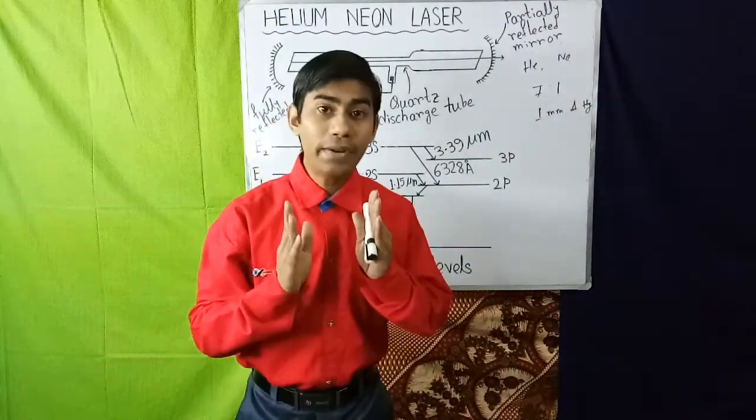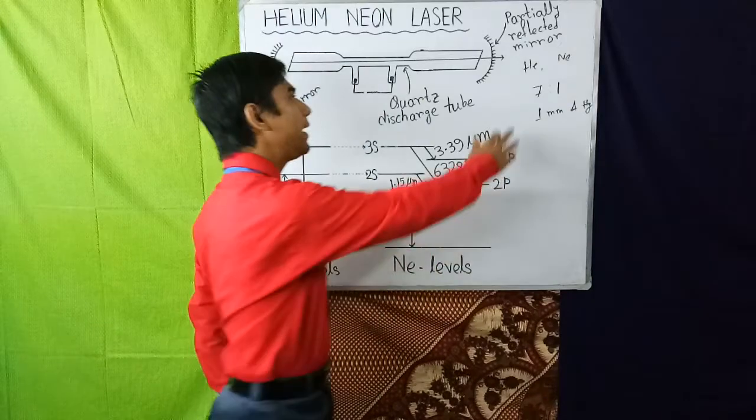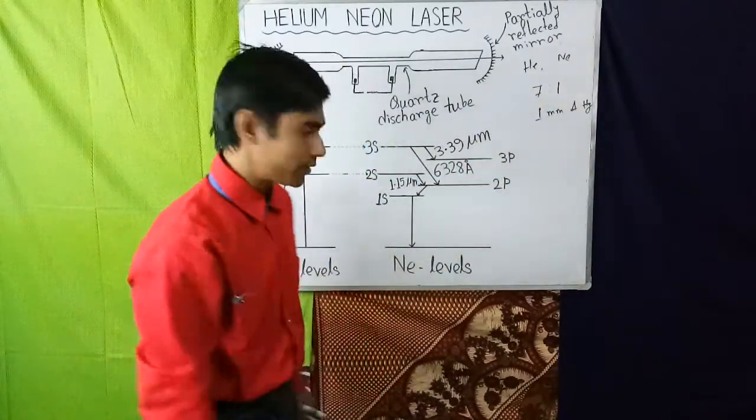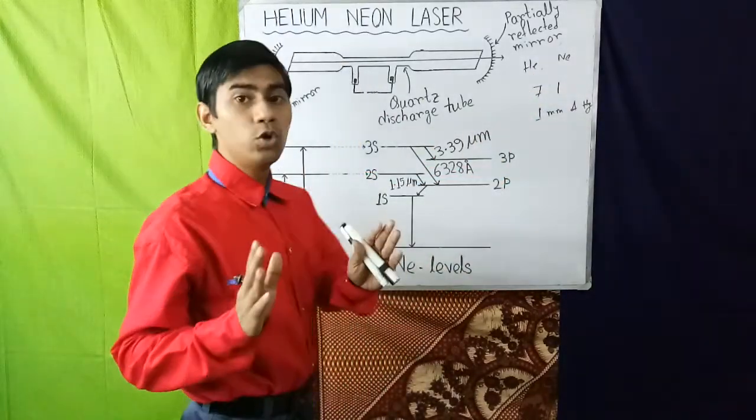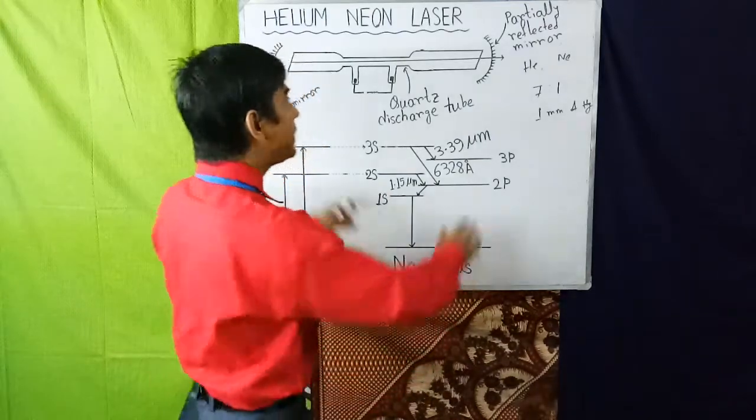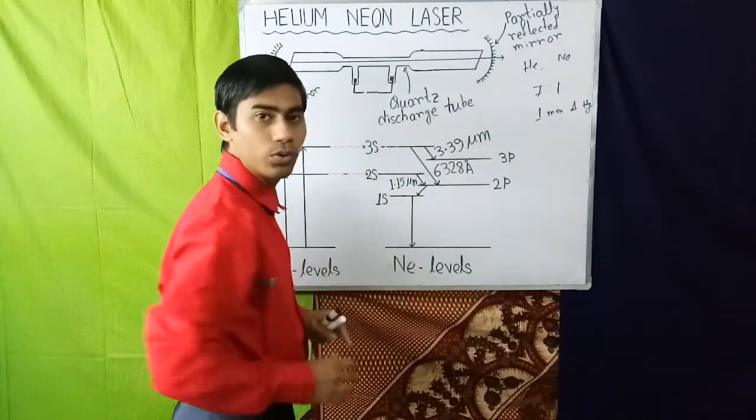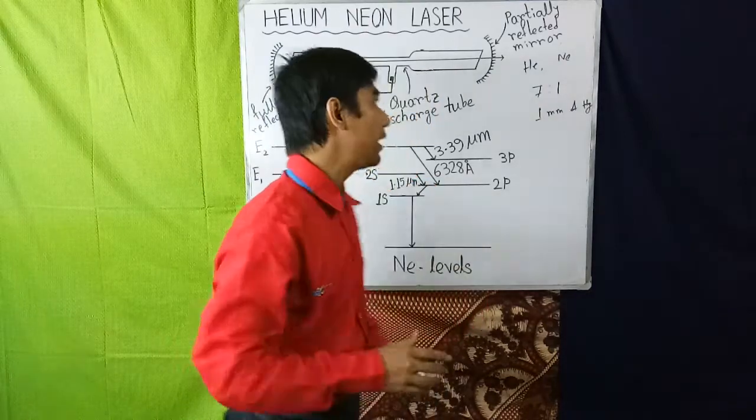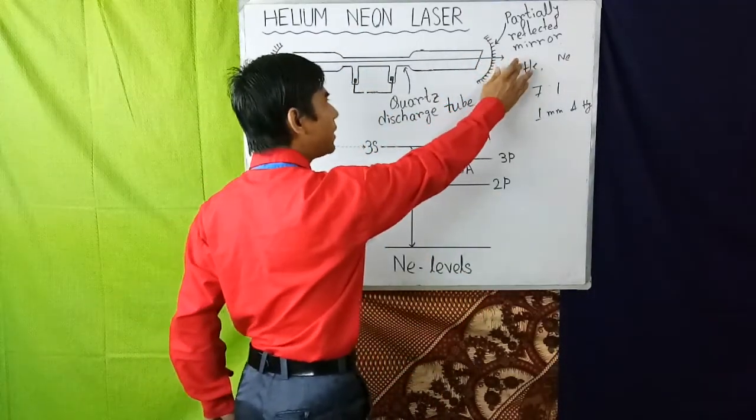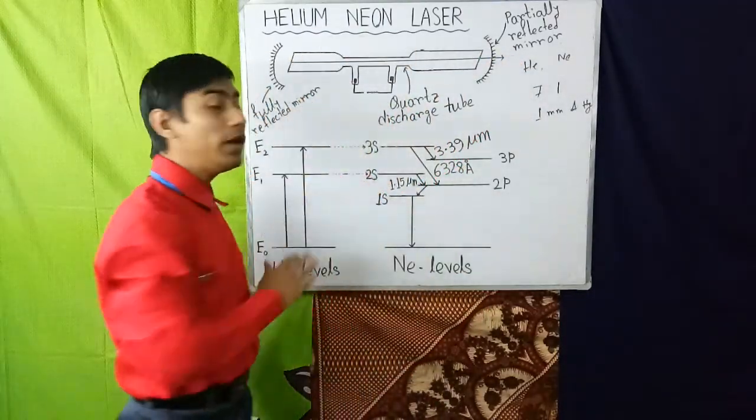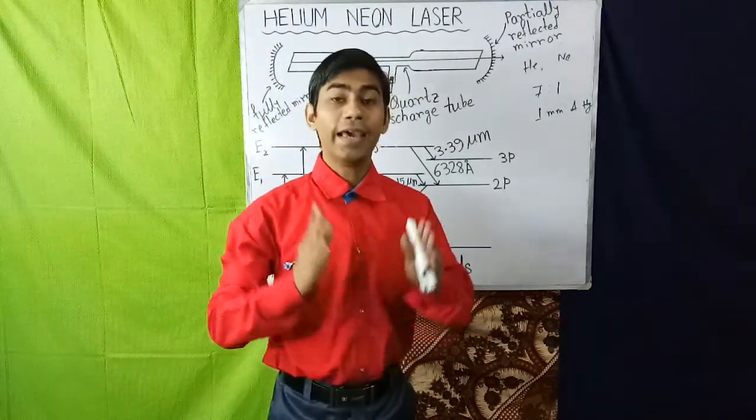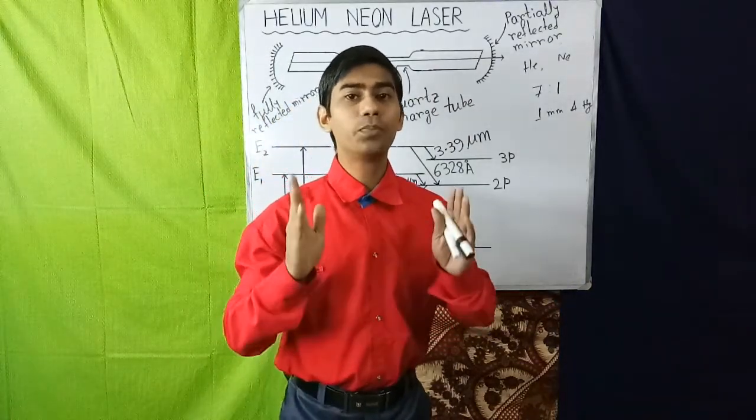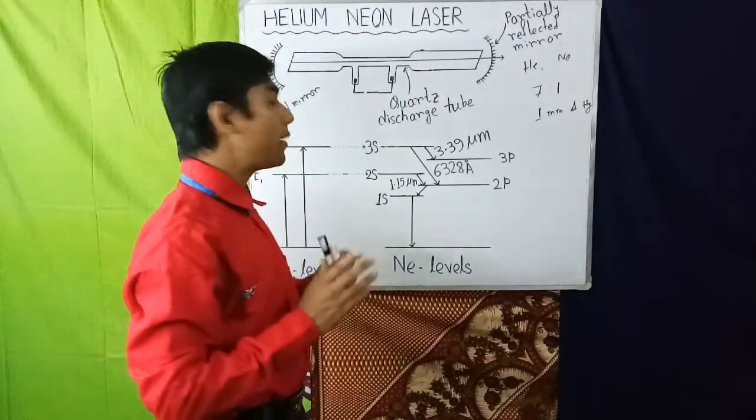The active medium used here is helium and neon. There are two curved mirrors fitted at the two ends of the tube which constitute the resonating system. This is the partially reflected mirror and this is the fully reflected mirror. Here discharge is produced by application of a high voltage between two electrodes sealed into the discharge tube.